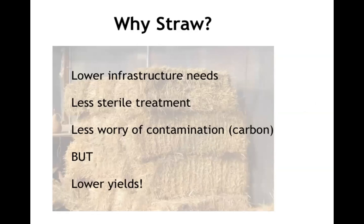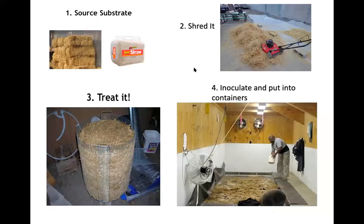What we like about straw is lower infrastructure needs, less sterile treatment, and less worry about contamination. However, with less nutritive substrates we do see lower yields — we want to assume yields per flush are maybe half of what we'd expect from a supplemented sawdust block. So there's a cost-benefit consideration in terms of what we're putting in versus what we're getting out.